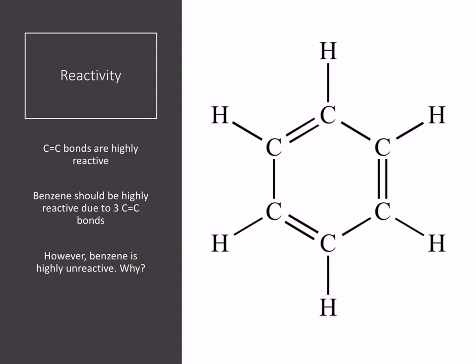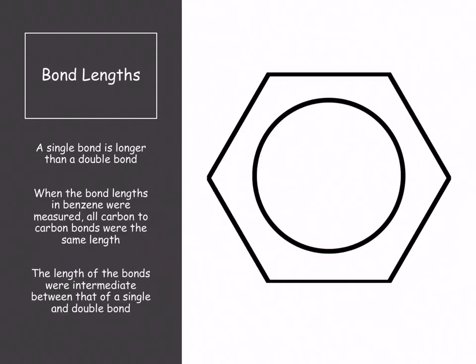It's actually due to the fact that there's three double bonds. Those three double bonds are the reason why benzene is quite unreactive. In normal terms, you would see a single bond being longer than a double bond. But when they measured all the bonds in benzene, they noticed that all the bond lengths were exactly the same. But they weren't the length of a carbon-carbon single bond, nor were they the length of a carbon-carbon double bond. They actually sat somewhere in between.